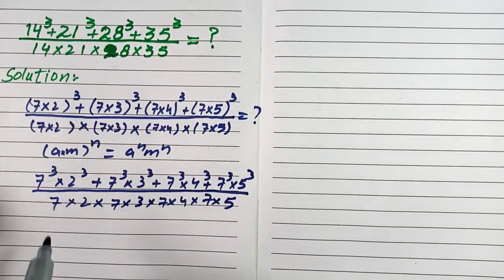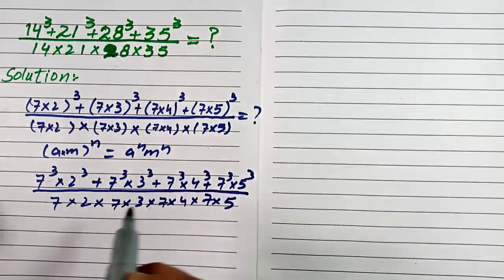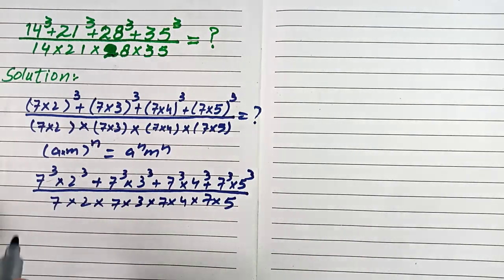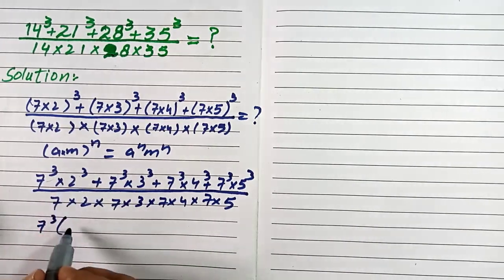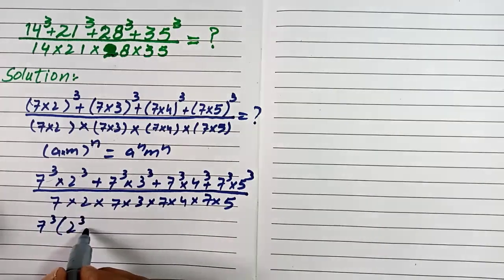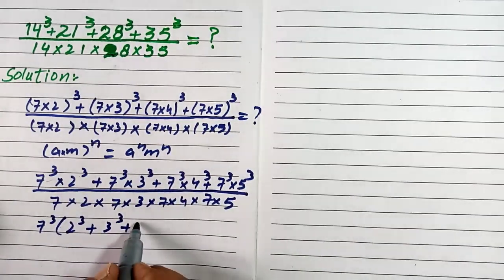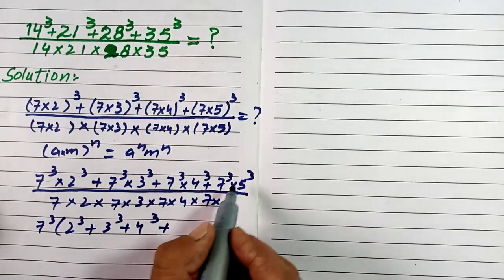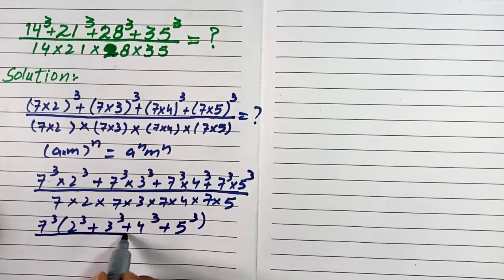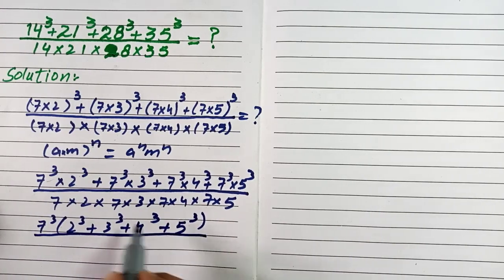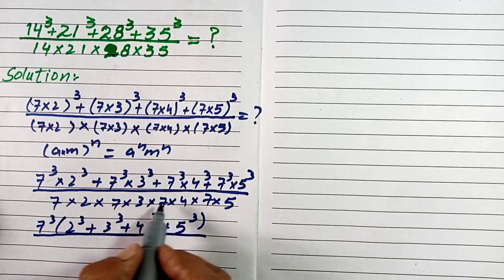In the numerator we can take 7³ as a common factor. After taking 7³ common we are left with 2³ + 3³ + 4³ + 5³ inside the brackets. In the denominator all terms are multiplied together.